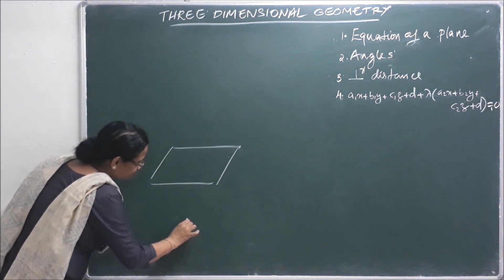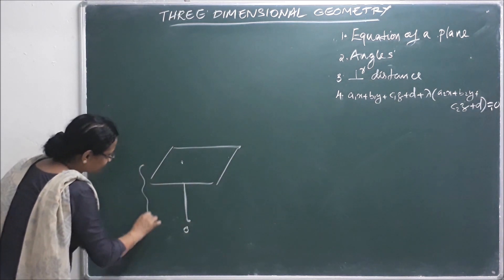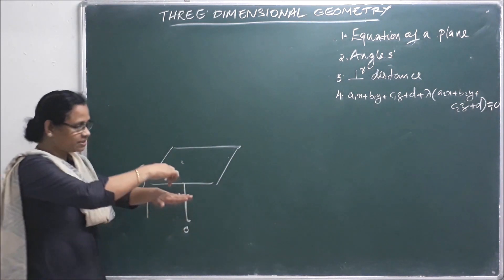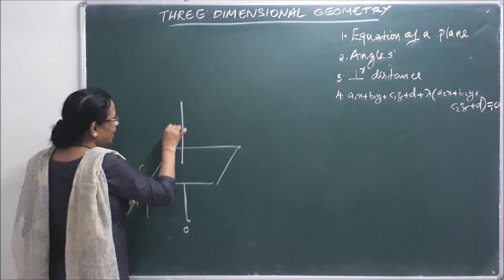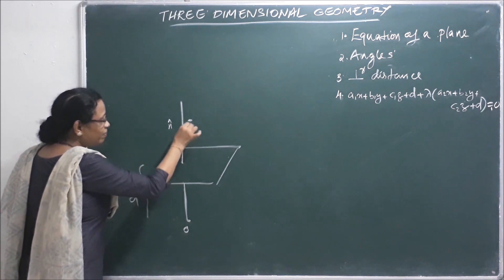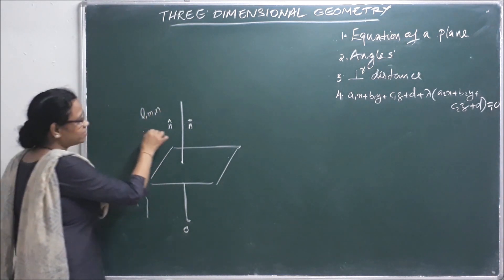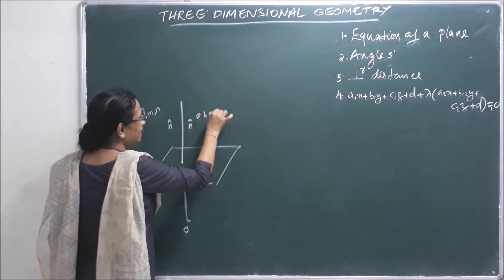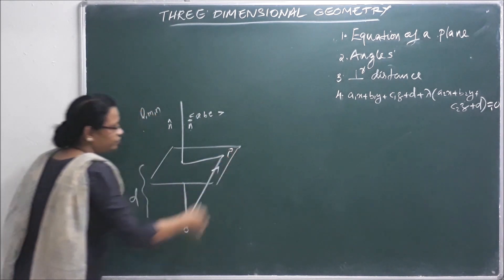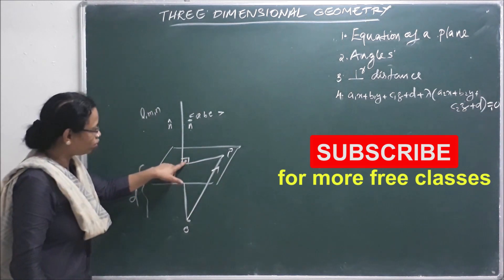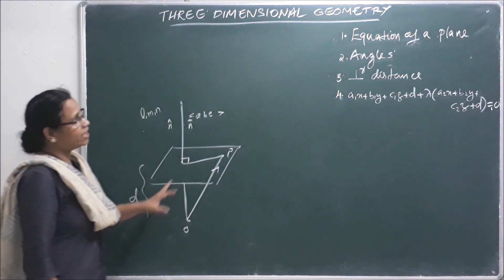This plane has a perpendicular distance D from the origin O. There is a normal vector on the plane. This gives us R dot N-cap equal to D, which is the equation of a plane.